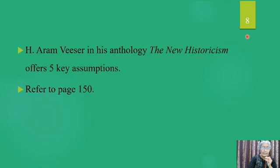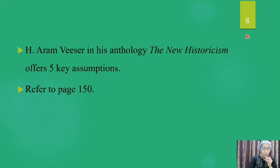Aram Veeser in his anthology New Historicism offers five key assumptions regarding new historicism, found in page 150. Going through these assumptions one after another gives you an idea of what new historicism is doing and why it is necessary to have a deeper reading of the text based on historical background and cultural milieu — only then will you understand what the author means.